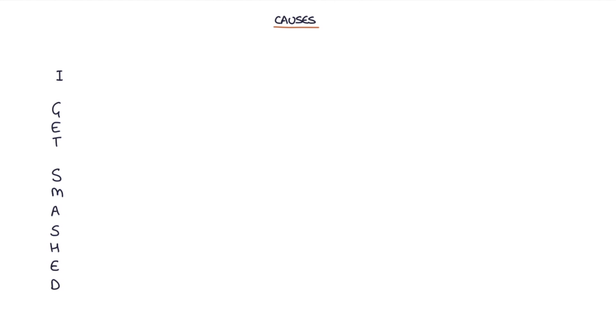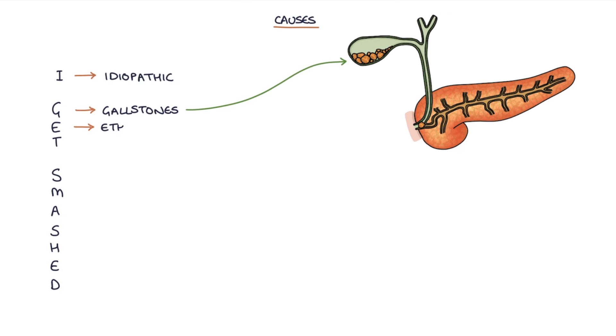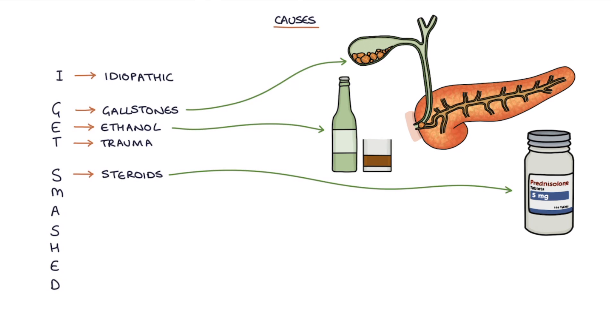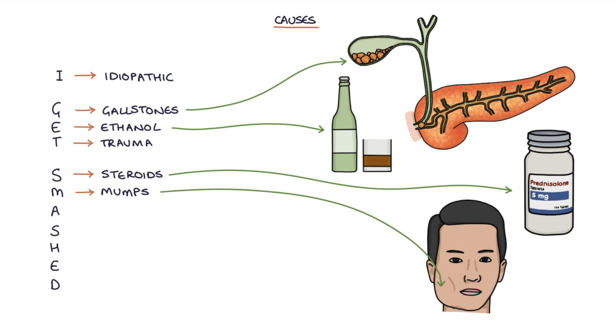There's a popular mnemonic that goes "I GET SMASHED" for remembering a long list of causes of pancreatitis. I refers to idiopathic, G refers to gallstones, E refers to ethanol or alcohol consumption, T refers to trauma, S refers to steroids, M refers to mumps infection, and A refers to autoimmune.